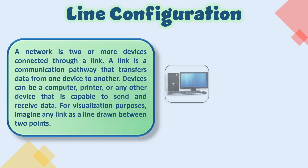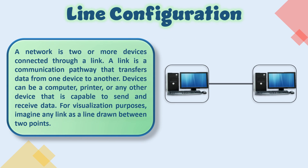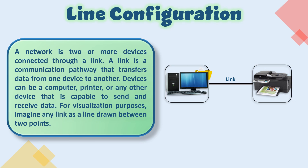A network is two or more devices connected through a link. A link is a communication pathway that transfers data from one device to another. Devices can be a computer, printer, or any other device capable of sending and receiving data. For visualization purposes, imagine any link as a line drawn between two points.